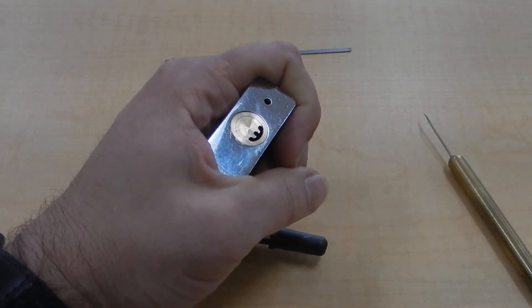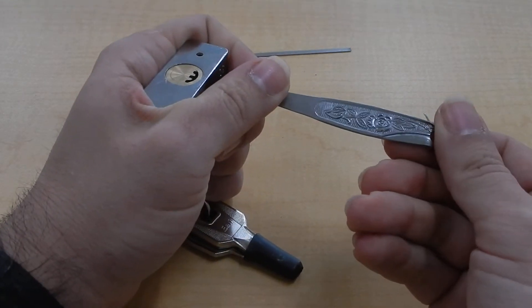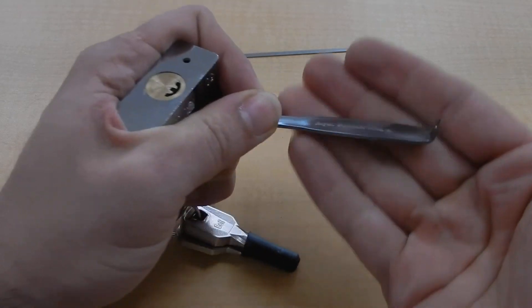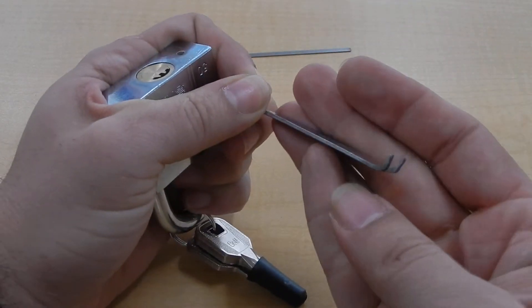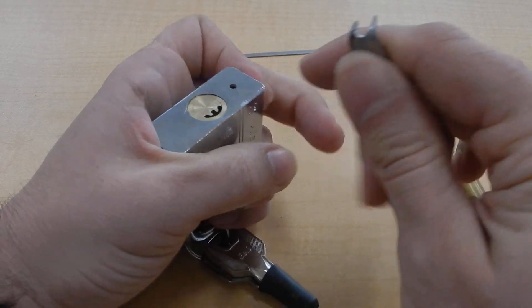So I have spoon handles laying around from some other projects that I do. And realized that if I bent an end up, thinned it out, and cut some notches into it.